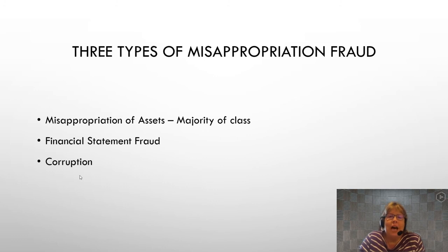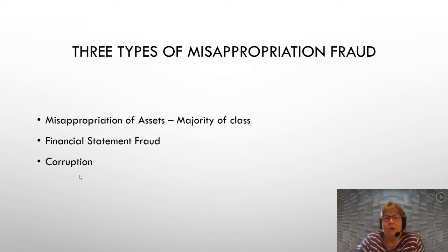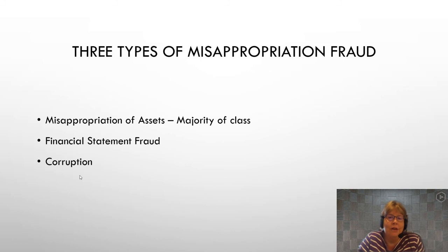There are really three types of occupational fraud. First is misappropriation of assets, which we're going to talk about for the majority of the class. The second is financial statement fraud, and the third is corruption. Misappropriation of assets is essentially the stealing of assets, and most of the frauds we'll look at in the textbook are of this type.